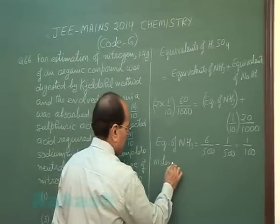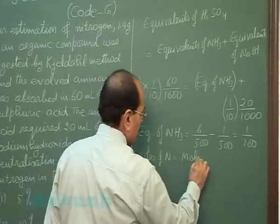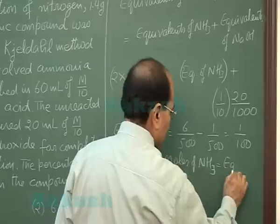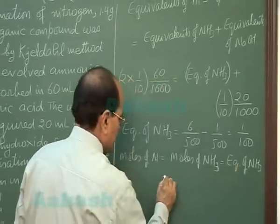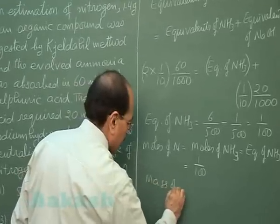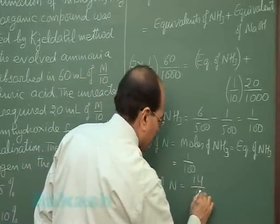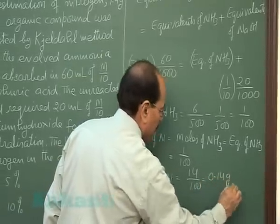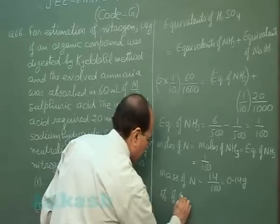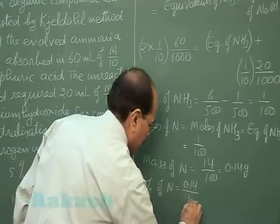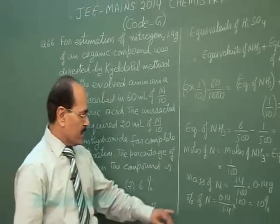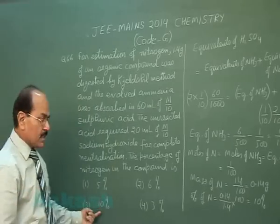Moles of nitrogen equal moles of ammonia, which equals equivalents of ammonia. Equivalents of ammonia = 6/500 − 1/500 = 1/100. So moles of nitrogen = 1/100. Mass of nitrogen = 14 × (1/100) = 0.14 gram. The mass of organic compound given is 1.4 gram. Percentage of nitrogen = (0.14 / 1.4) × 100 = 10%. Option 3 is the correct answer.